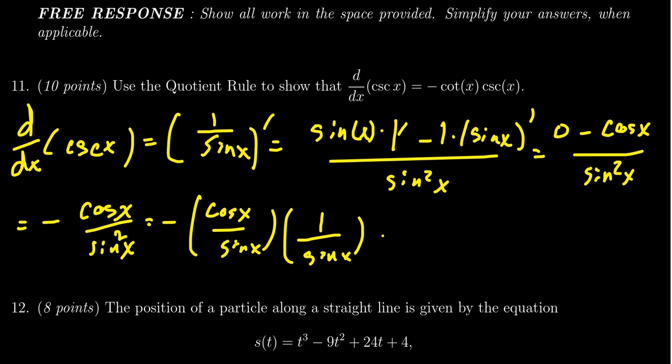We can make the conclusion that this is negative cotangent of x times cosecant of x, thus proving the identity that was required.